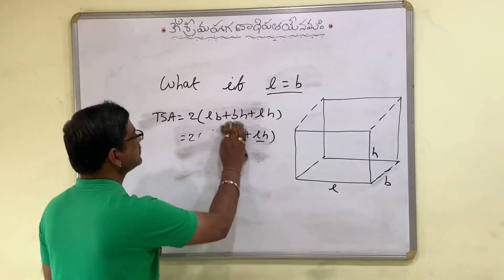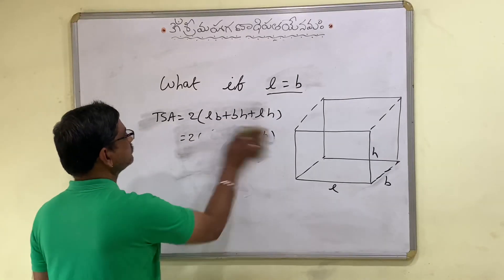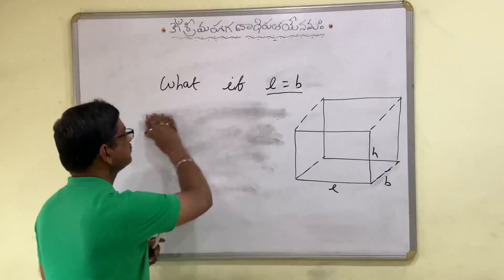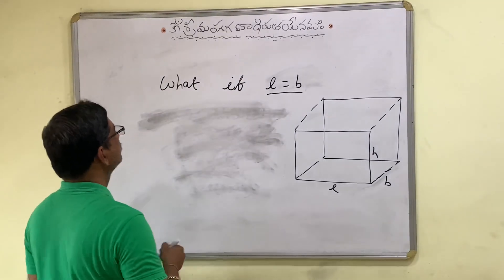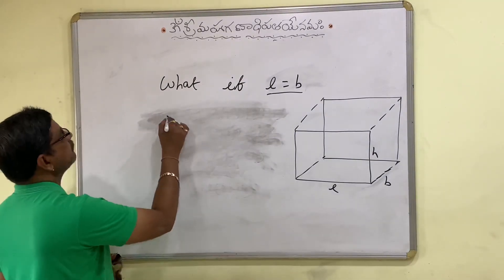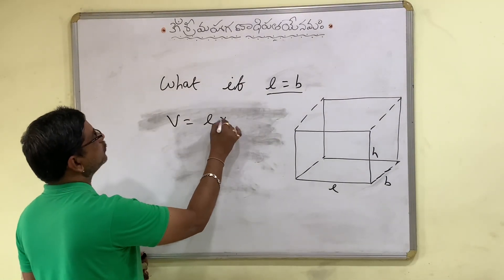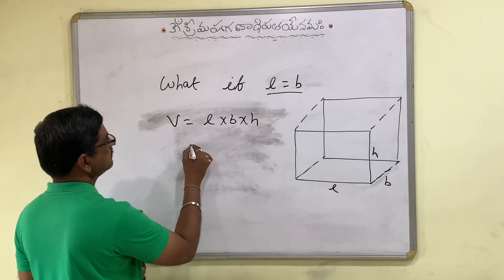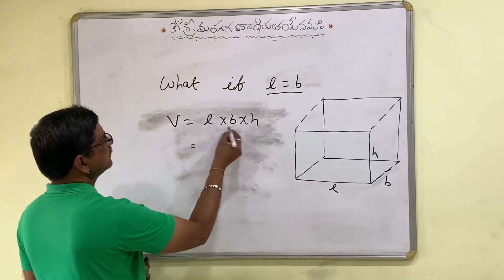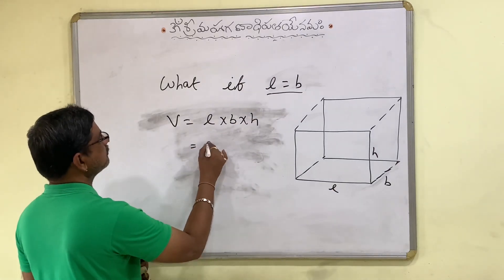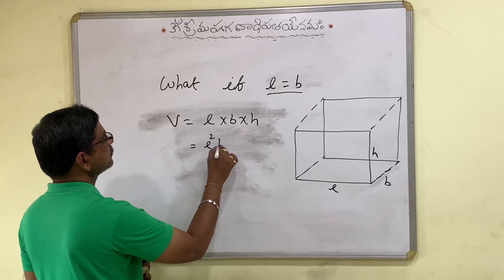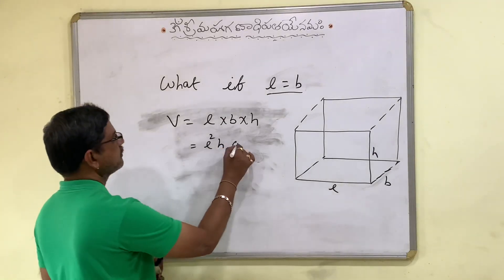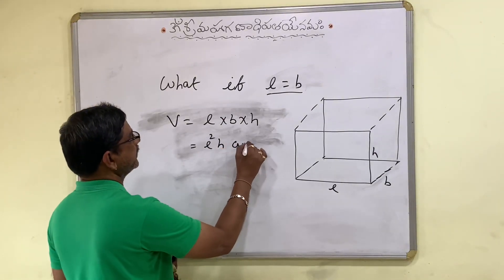Now what happens to the volume? Volume of cuboid is L into B into H. If L is equal to B, then the volume becomes L square into H cubic units.